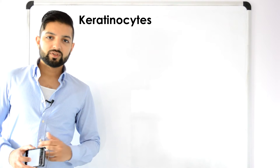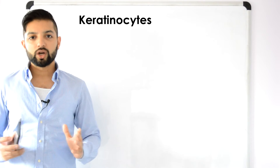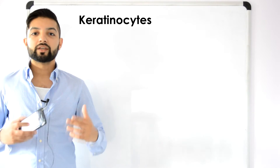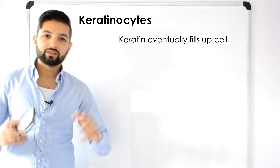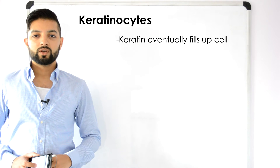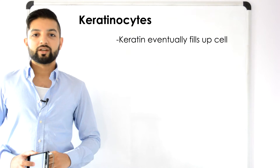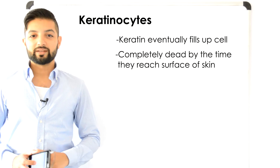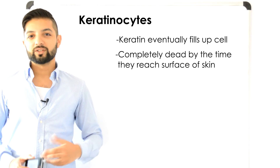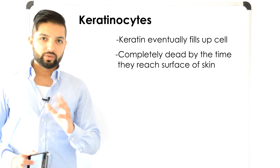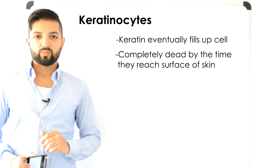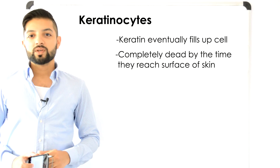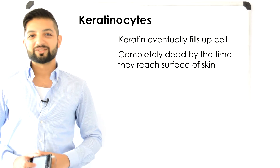As cells are pushed up by the production of new cells through mitosis beneath them, they make the keratin that eventually dominates their cell contents. Now the most interesting part about the keratinocytes is that by the time they reach the surface of the skin they're completely dead. They're essentially keratin-filled plasma membranes. Whenever you look at somebody you're looking at nothing but dead cells.